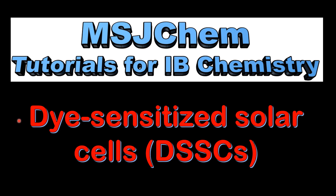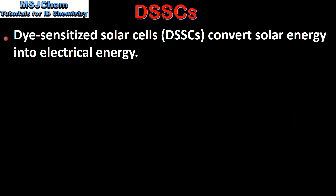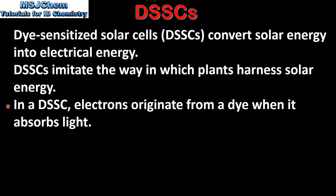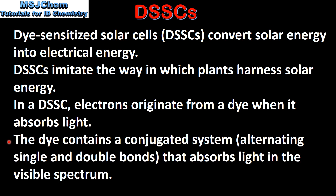This is MSJChem. In this video I'll be looking at dye-sensitized solar cells. Dye-sensitized solar cells convert solar energy into electrical energy. DSSCs imitate the way in which plants harness solar energy. In a DSSC, electrons originate from a dye when it absorbs light. The dye contains a conjugated system which has alternating single and double bonds that absorbs light in the visible spectrum.